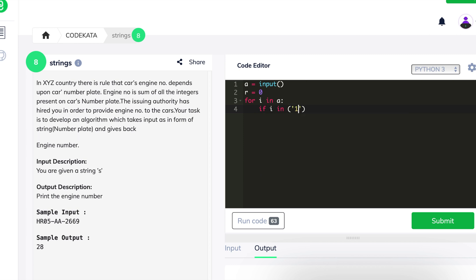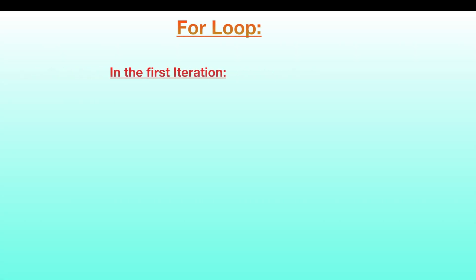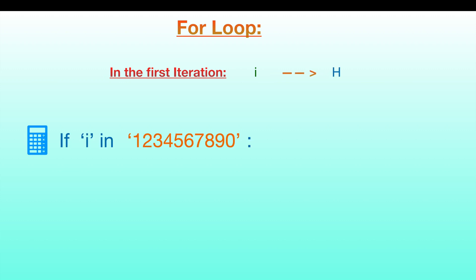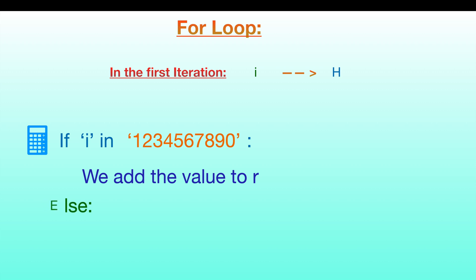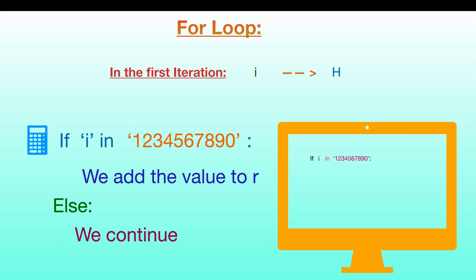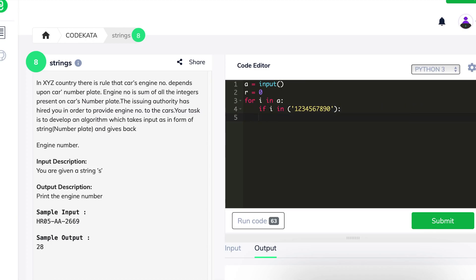There are many ways to solve this question, but for simplicity, we stick to an easy method. We declare a for loop where i maps to each value of the string in the variable a. We declare an if condition where we check if the obtained character is in the string '0' to '9', filtering each integer value, and we increment r by the integer value of i, else we continue.